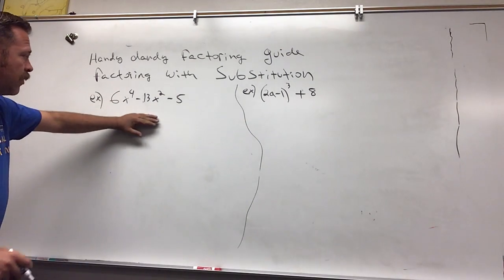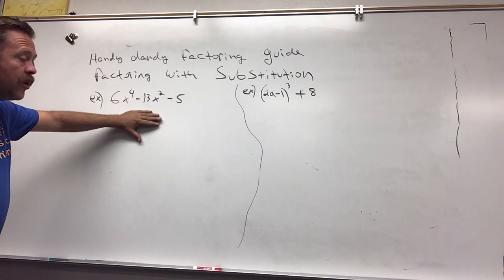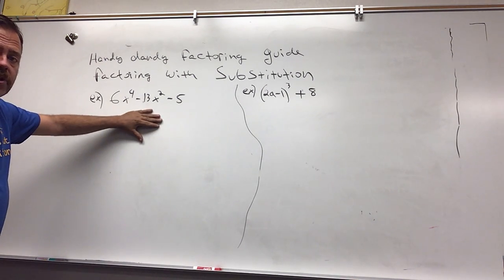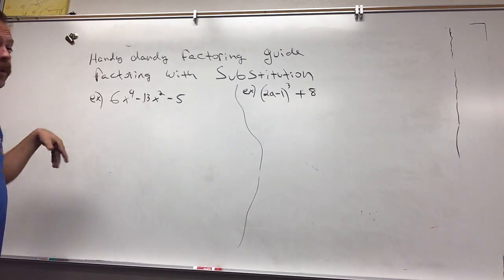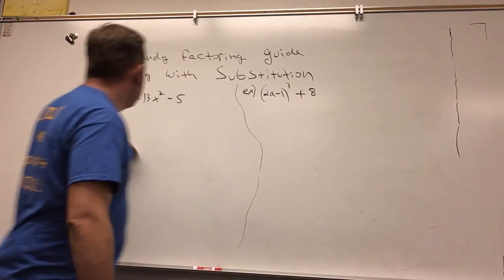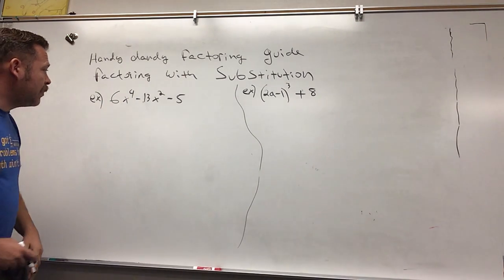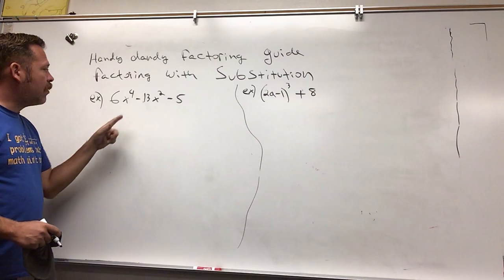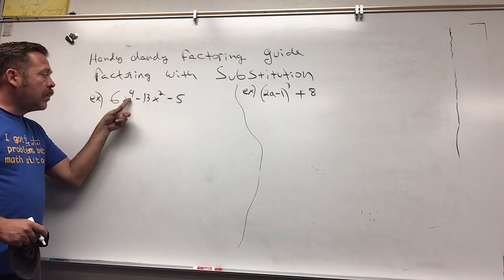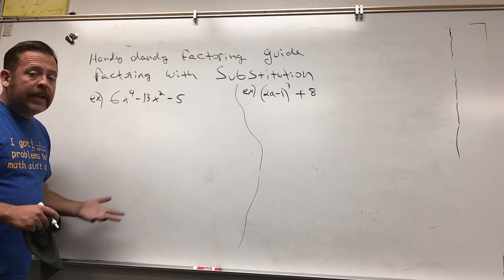Let's look at this one. First we would try GCF, there's not one. It's a trinomial, so we look at the types we can factor trinomials with: magic numbers and AC method. Because this number is a six and not a one, we're going to use AC method. The only problem is it's not quadratic, it's to the fourth power, not x squared, so we can't use that method.